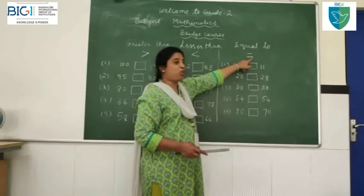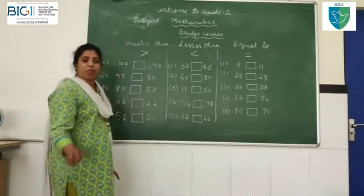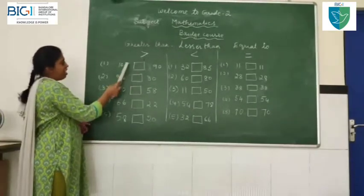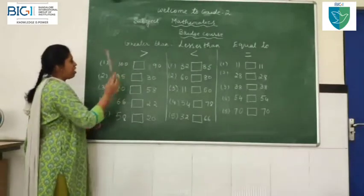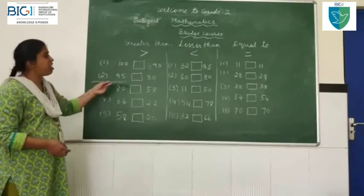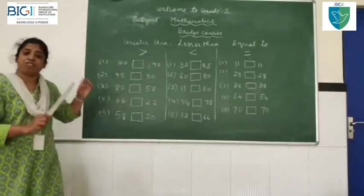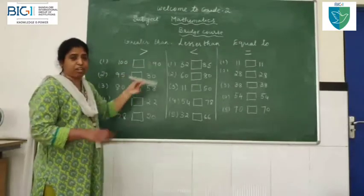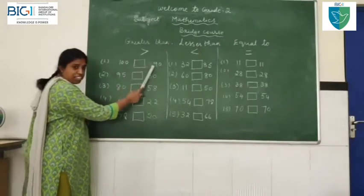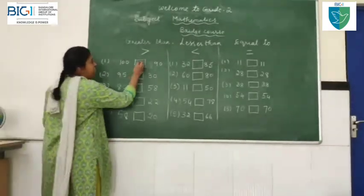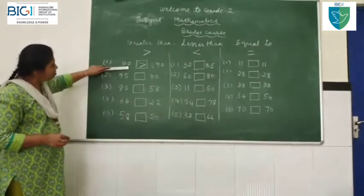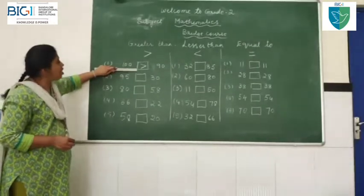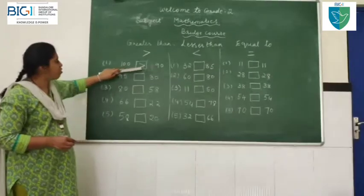Equal to is equals. Now, I am going to give examples of greater than. Always compare the left side number with the right side number. If the left side number is bigger than the right side number, then it is greater. 100 dash 90: 100 is bigger than 90, so you have to put greater than.